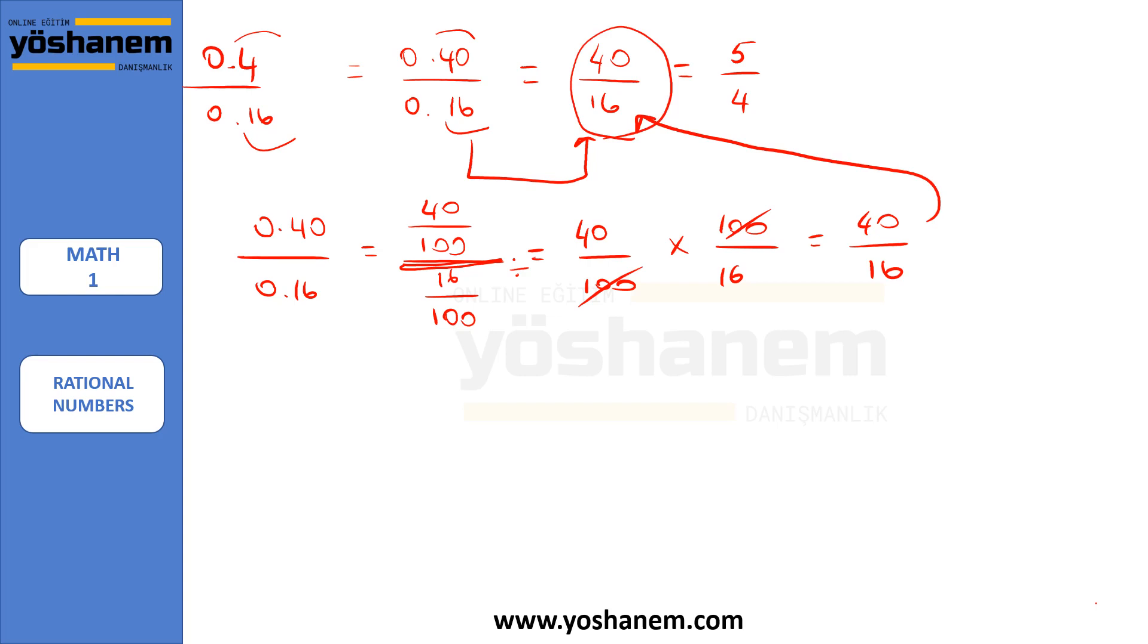Let's try another one. 3.4 over 0.17. Let's look at that. There is one digit here and there are two digits here. So I can write a zero in the numerator and in the denominator. I have 0.17. It equals to 340 over 17. And if we divide by 17, we will have 20.